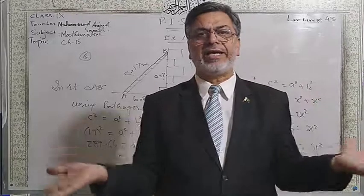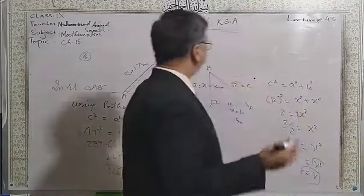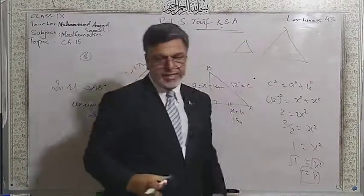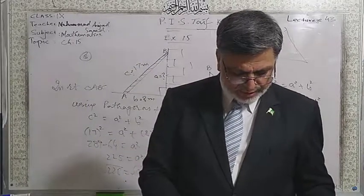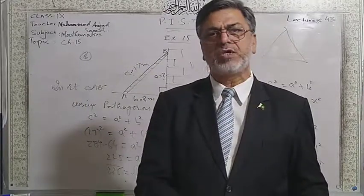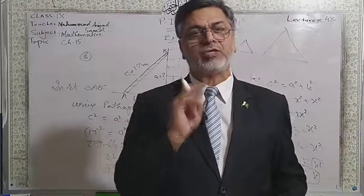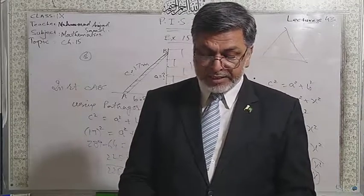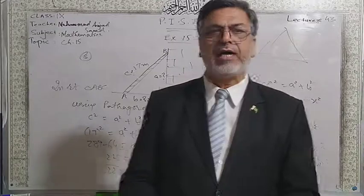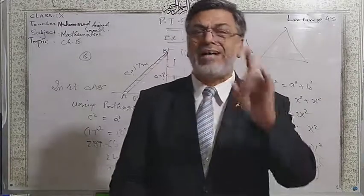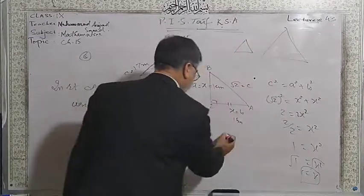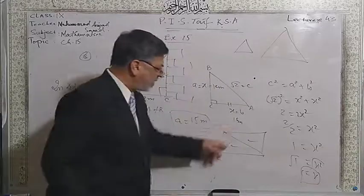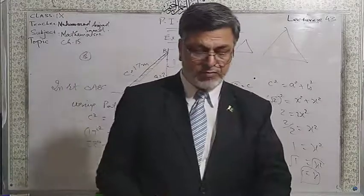Similar figures have the same area — no, that is wrong. Similar figures may have different areas. Congruent figures have the same area — yes, of course, congruent figures are similar and equal, so their area will be the same. A diagonal of a parallelogram divides it into two non-congruent triangles — no, it divides it into two congruent triangles, so this is also false.